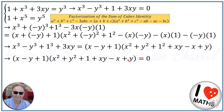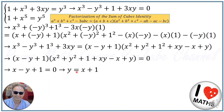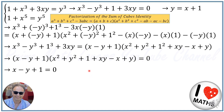Therefore we can write (x minus y plus 1) times (x squared plus y squared plus 1 plus xy minus x plus y) equals 0. When two factors multiply to give 0, each factor must equal 0, so x minus y plus 1 equals 0, meaning y equals x plus 1. We retain this equation for later use.